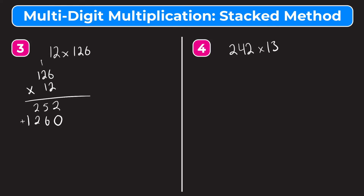We add those two together to get our final answer: 2 plus 0 is 2, 5 plus 6 is 11 so we put the 1 and carry 1, 2 plus 2 is 4 plus that 1 is 5, and 1 plus 0 is 1. So our final answer is 1,512. This is a good example of why we write the larger number on top — if we had written 12 on top times 126, we would have had to do three separate multiplication rows instead of two, making the addition at the end tougher. By keeping 12 on the bottom, we only end up with two rows.